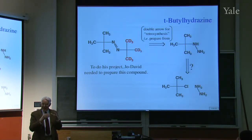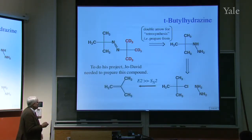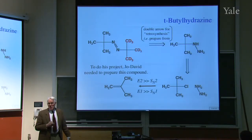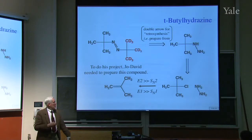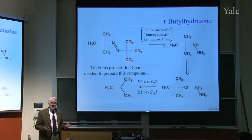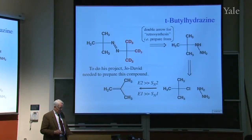Steric hindrance, right? When you have all those methyl groups, it's hard to get at that carbon. And what would happen instead? If you can't do the substitution? Elimination. So you're going to have E2 will be much greater than SN2 here. And E1 is greater than SN1, too. So you're going to get this, not that. So you're going to have to figure some other way of making T-butyl hydrazine.